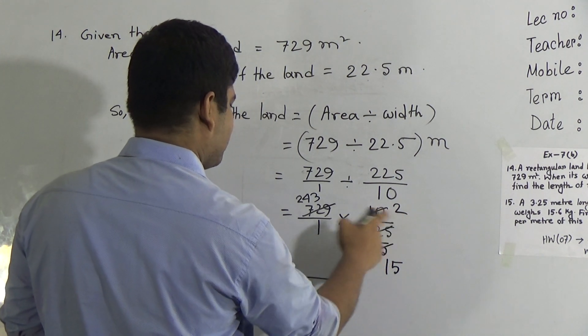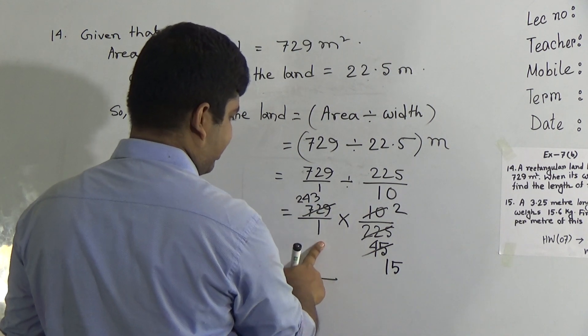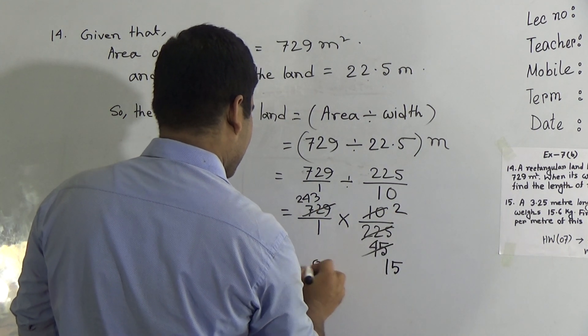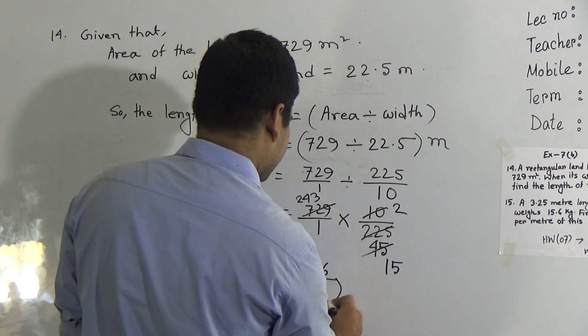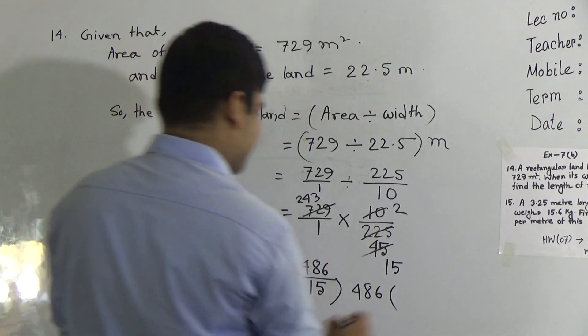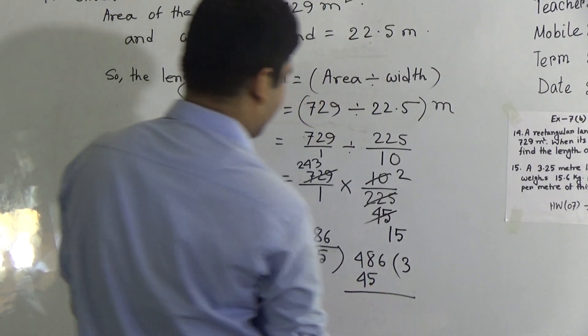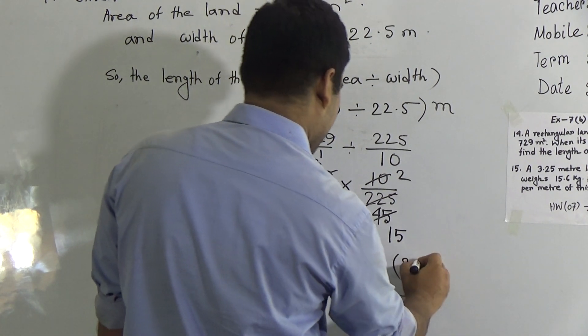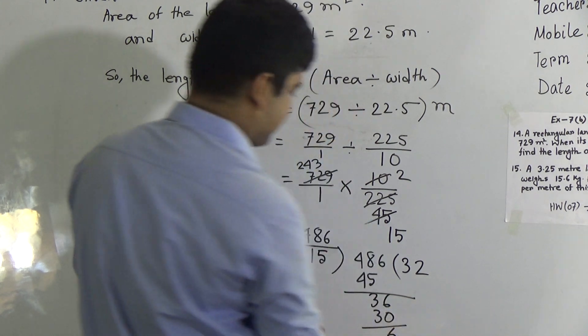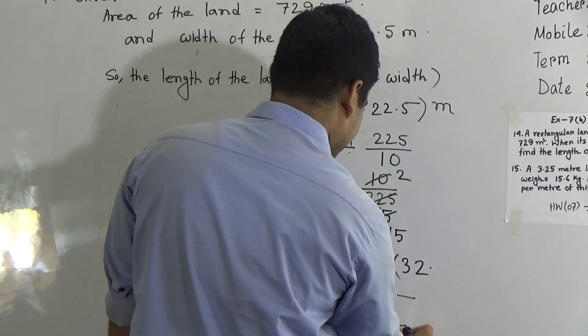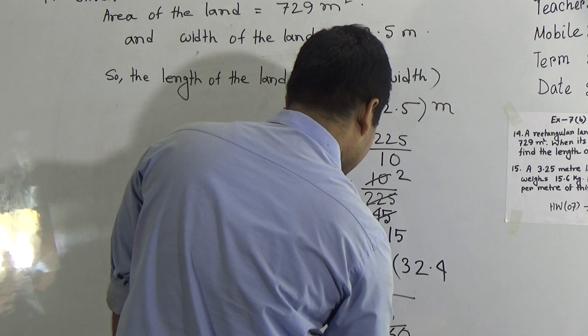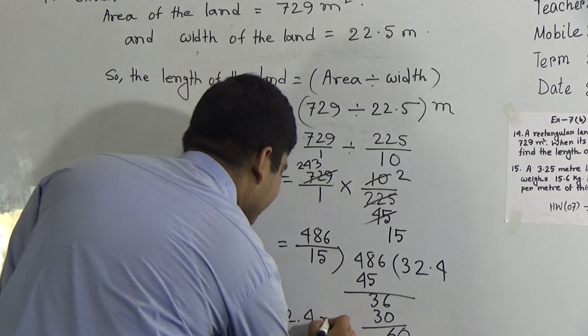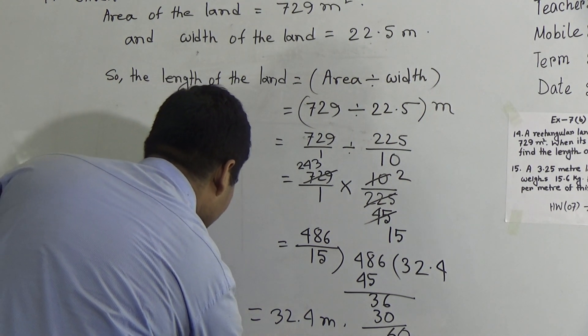Now as a numerator, there is 2 multiply by 243, and as a denominator there is 1 and 15. So 15 ones are 15. So 2 threes are 6, 2 fours are 8, and 2 twos are 4. Now we divide 486 by this 15. 15 threes are 45, we subtract, we get 36. In 36, 15 goes in 2 times. 15 twos are 30. So for this point, we write here 0. In 60, 15 goes in 4 times. 4 fifteens are 60, 0. So 32.4 meter, and it is the answer, 32.4 meter.